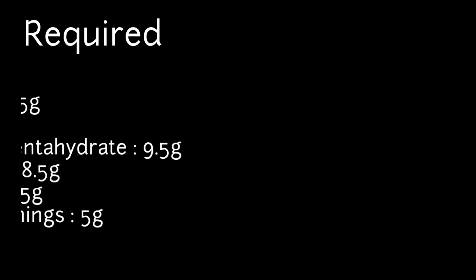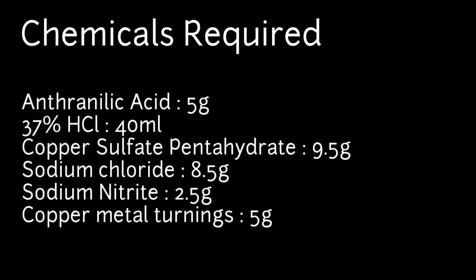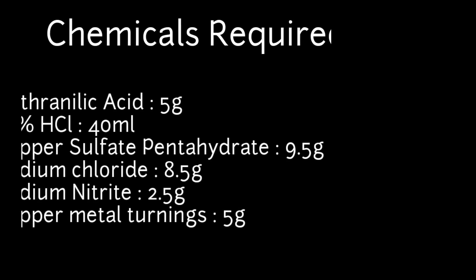For this experiment, you will need 5 grams of anthranilic acid, 40 milliliters of 37% hydrochloric acid, 9.5 grams of copper 2-sulfate pentahydrate, 8.5 grams of sodium chloride, 2.5 grams of sodium nitrite, and 5 grams of copper metal turnings.